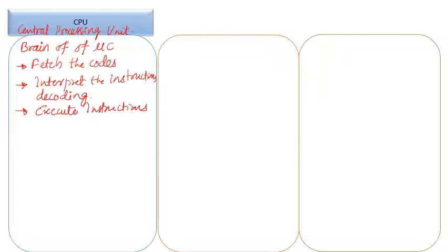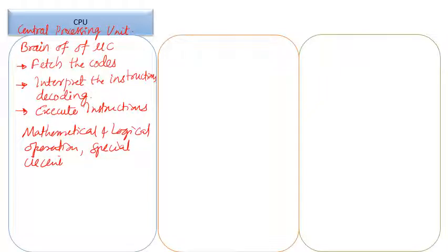Apart from fetch-decode-execute, the CPU also carries out mathematical and logical operations on binary data. For that purpose there is a special circuitry inside the CPU called the ALU — arithmetic and logical unit. With the help of the ALU, the microcontroller can calculate certain data and get required results. We will look at the CPU in more detail when we deal with the components of the PIC18F microcontroller in later parts.